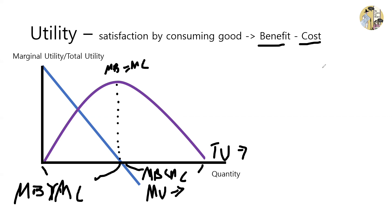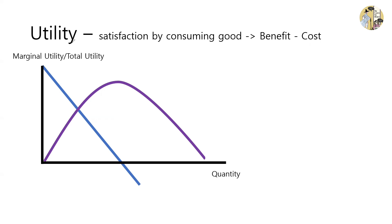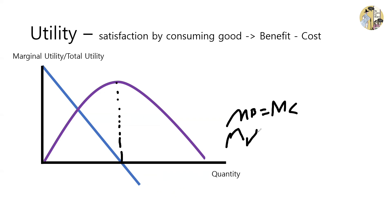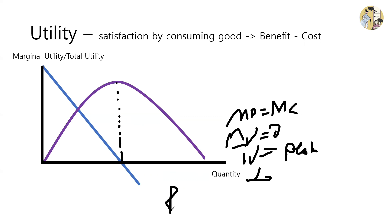The most important concept throughout this section about utilities, costs, and benefits is that the point where the marginal benefit equals the marginal cost, or the marginal utility is zero, or the total utility is at its peak — these are all actually the same point. And this is the point at which the rational consumer would consume to maximize their utility.